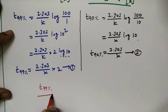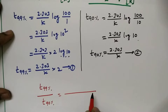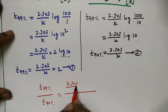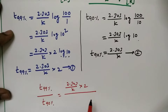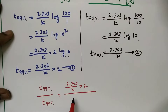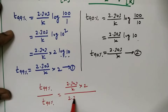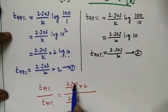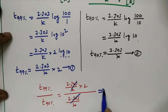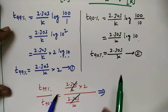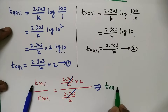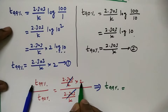Now dividing: t99% / t90% = (2.303/k × 2) / (2.303/k). Both 2.303/k terms cancel each other, and we are left with t99% = 2 × t90%. This proves the relationship.